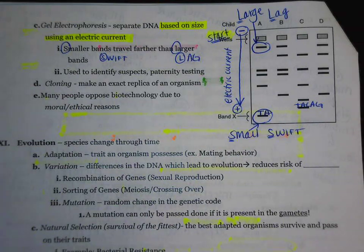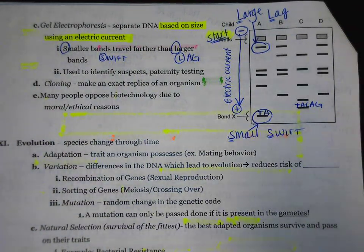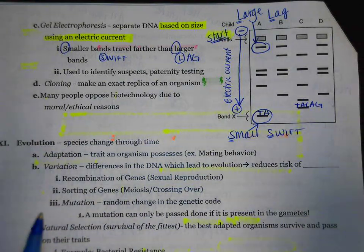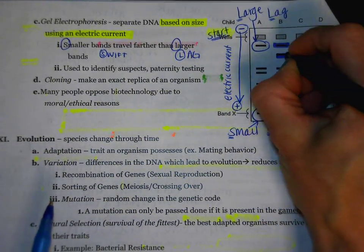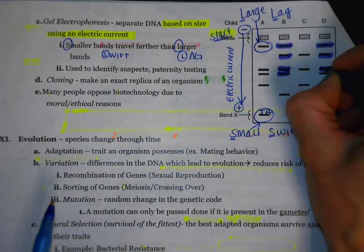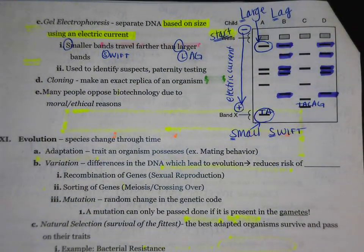Why might we use gel electrophoresis? To identify suspects at a crime scene, and also for paternity testing. In order to figure out how closely related things are, you would match up the bands. The ones that have the most similar bands are going to be the most closely related — like bands B and D, where you might notice that all of their bands match up.